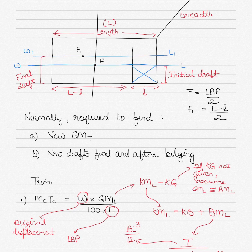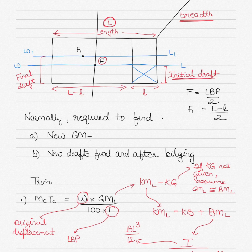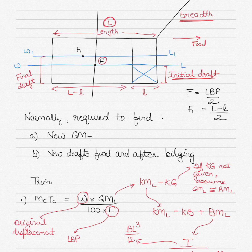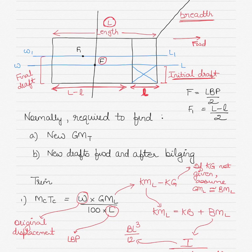As you can see here on your screens, the diagram shows a vessel the length of which is denoted by the capital letter L, and the breadth is drawn on the side. The center of flotation of the vessel is denoted by the letter F, based on the original water line which also forms the basis for the initial draft. The compartment towards the forward part of the vessel has been bilged, and the length of this compartment is denoted by the lower case letter l. Therefore, the resultant length will be capital L minus lower case l.